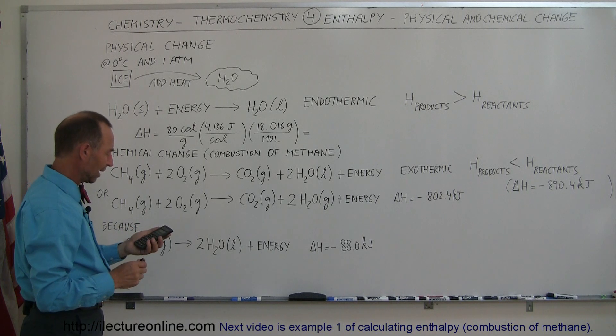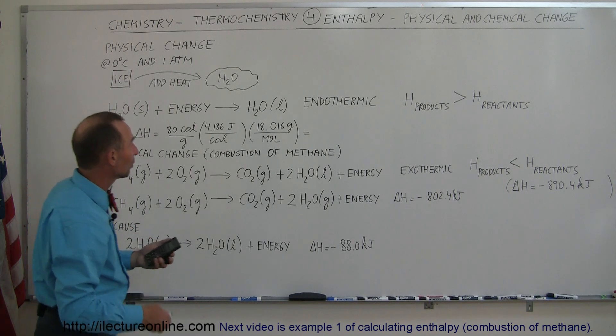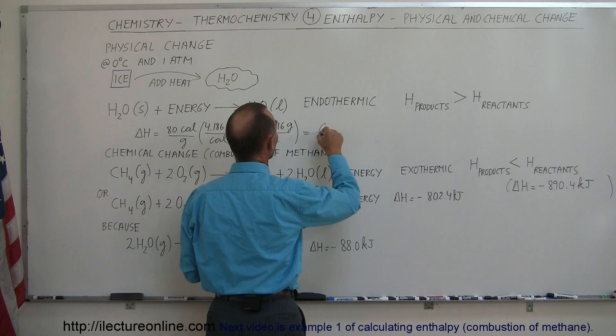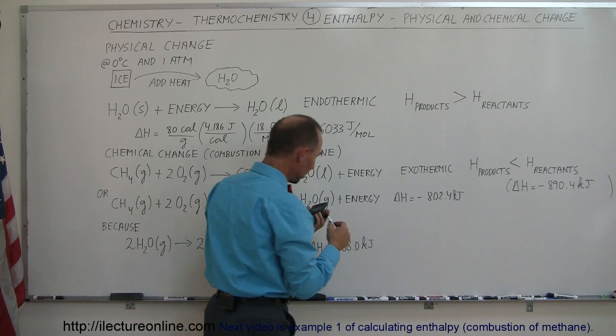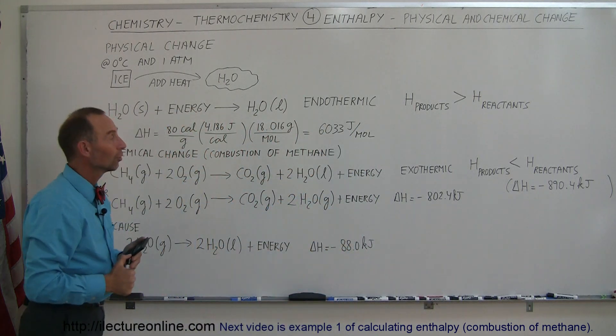So we have 80 times 4.186 times 18.016, that's the number of grams per mole for water, and when we do all that, we get 6,033 joules per mole. That would be the change in enthalpy to take ice and turn it into water.